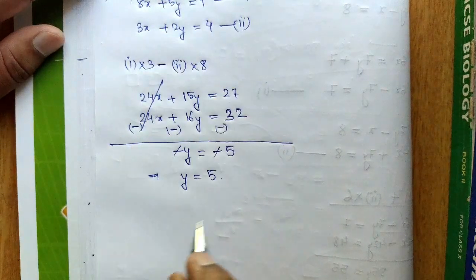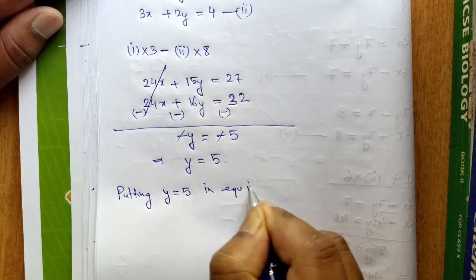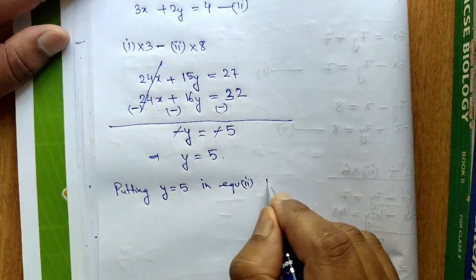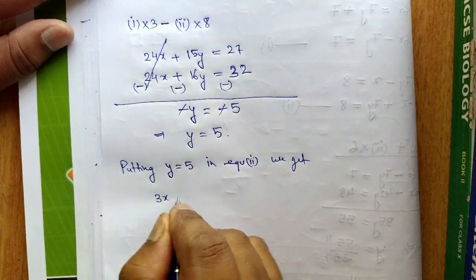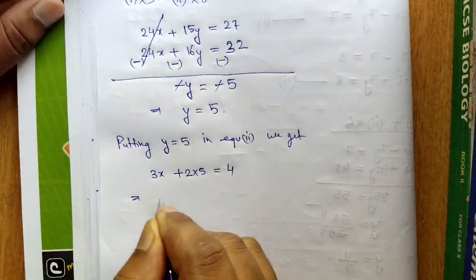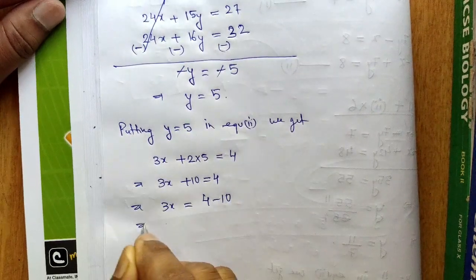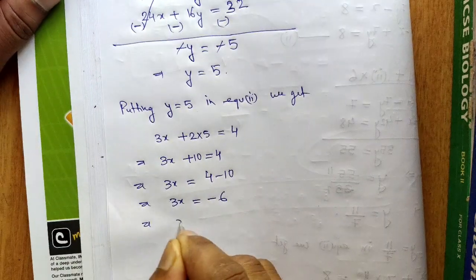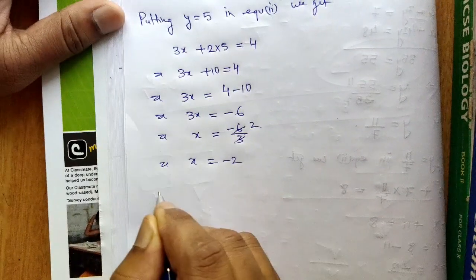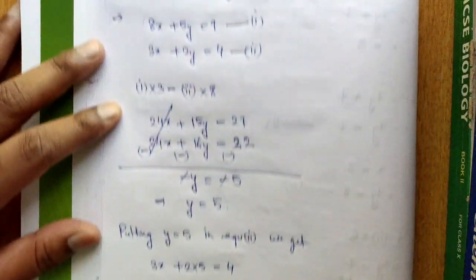Now substitute y equals 5 into Equation 2: 3x plus 2y equals 4 becomes 3x plus 2 times 5 equals 4, so 3x plus 10 equals 4. Then 3x equals 4 minus 10, which is minus 6, so x equals minus 6 divided by 3, giving x equals minus 2. Therefore, x equals minus 2 and y equals 5 is the solution to this given pair of equations.